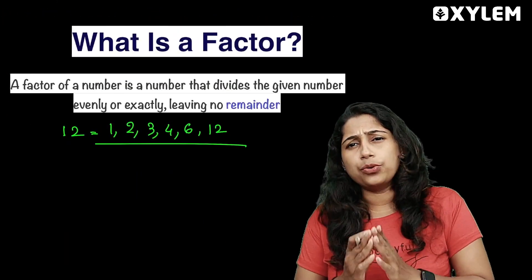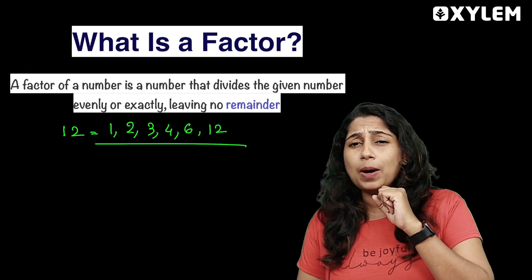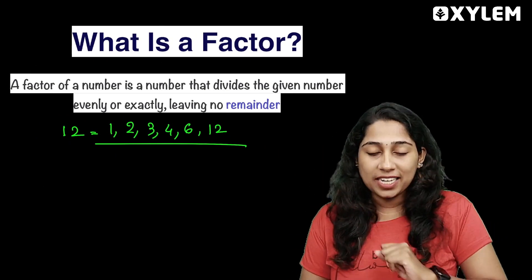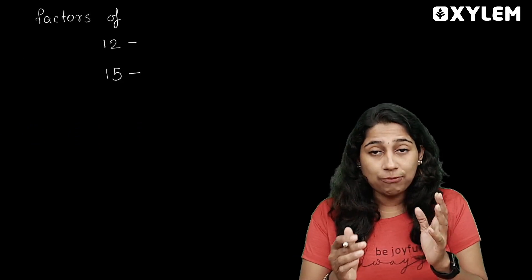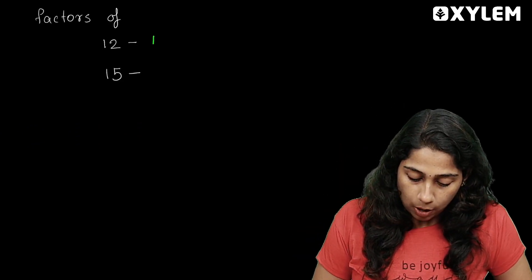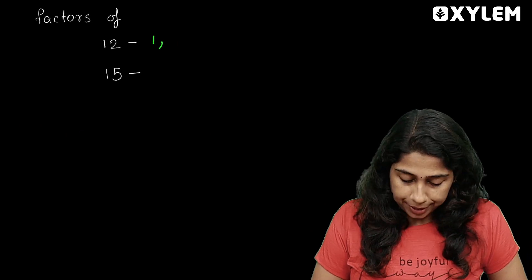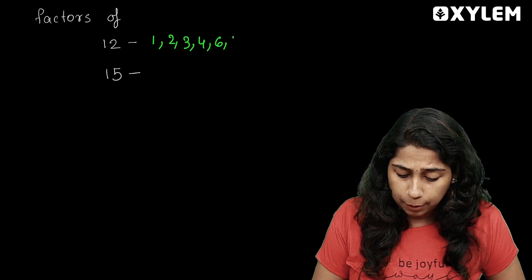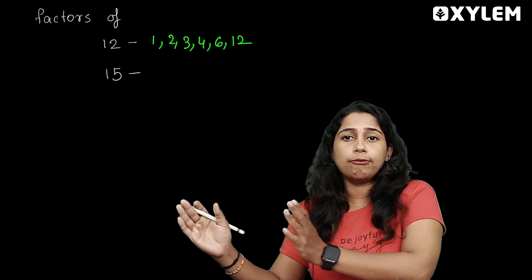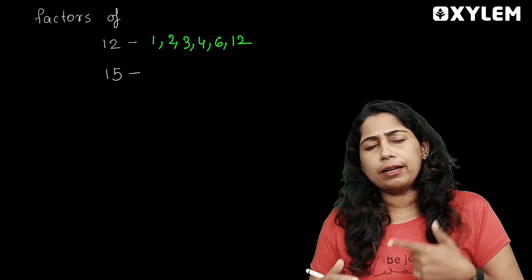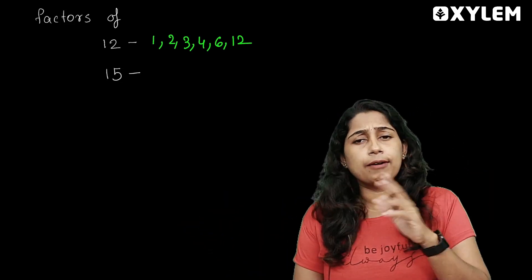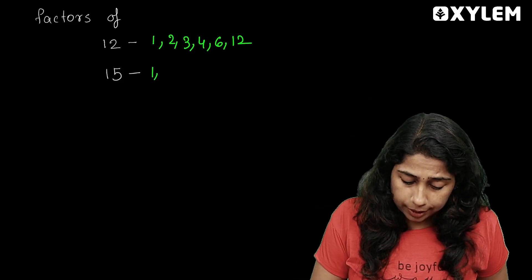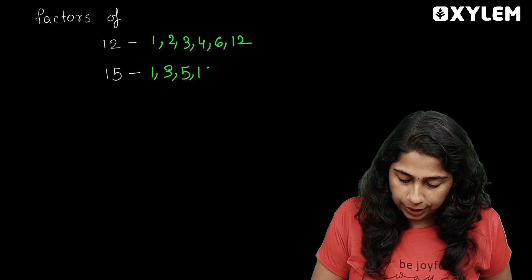These are the factors of 12: 1, 2, 3, 4, 6, and 12. These are the factors of 12. We have different numbers. We also have the factors of 15: 1, 3, 5, and 15.